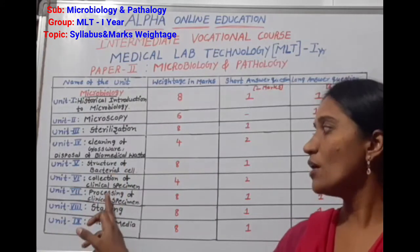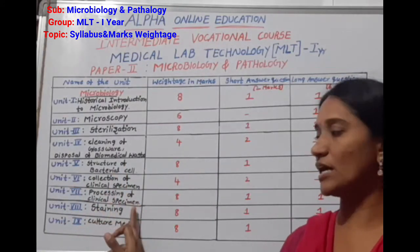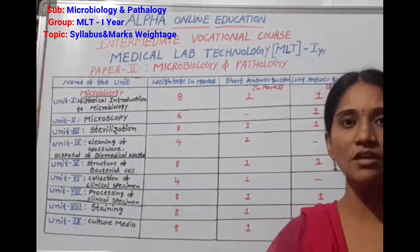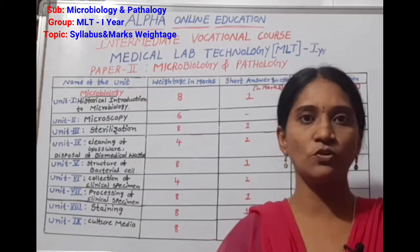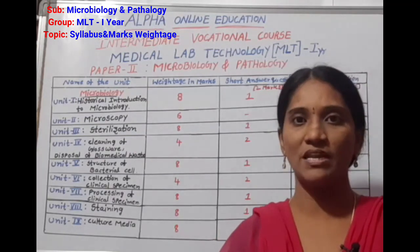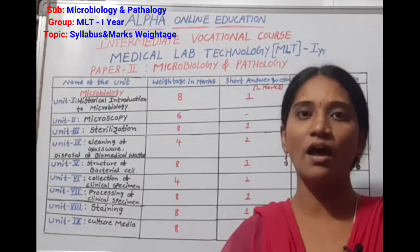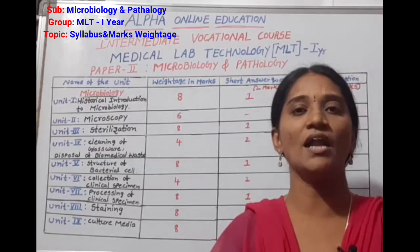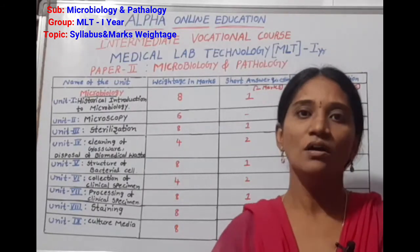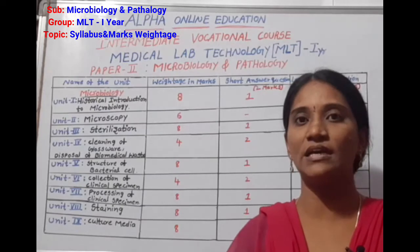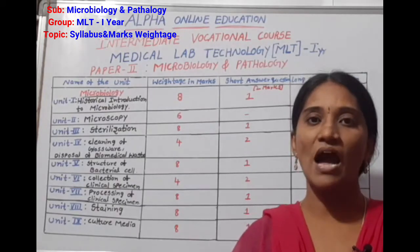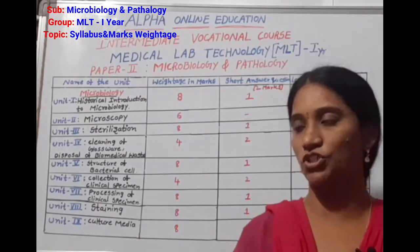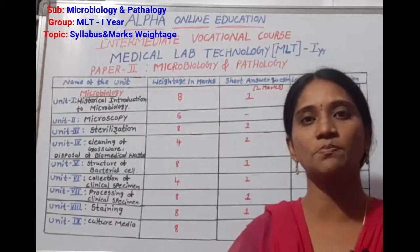Unit 7 is Processing of Clinical Specimens. After we collect patient samples — blood, urine, sputum, stool — we then process those specimens. This unit covers how we process the collected clinical specimens.